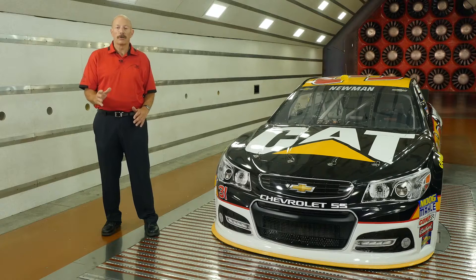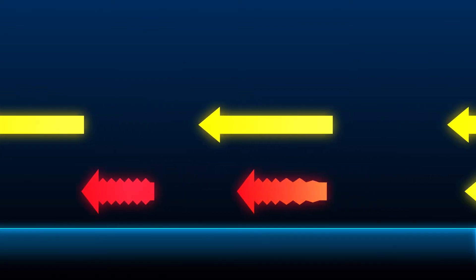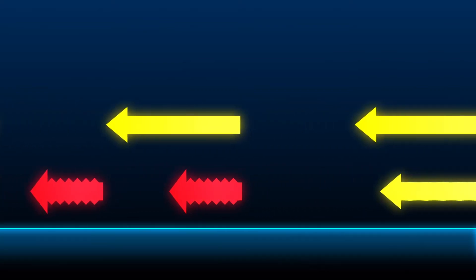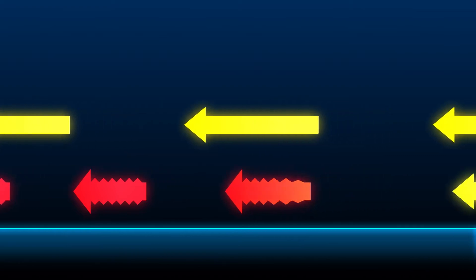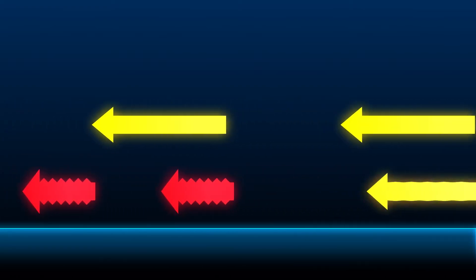Let me show you how we control the boundary layer at this facility. Without some form of boundary layer control, this slow moving air will grow and begin to influence the pressures and forces around your test model.